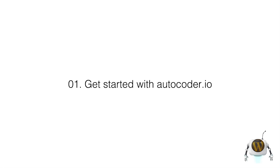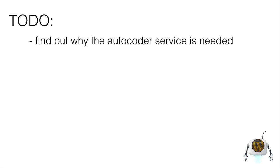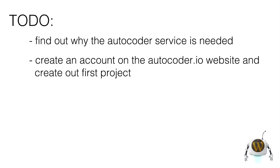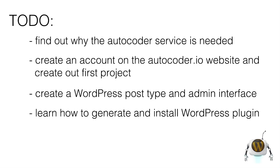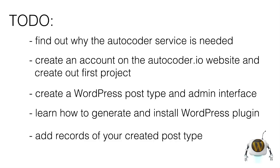In this video, I'll tell you how to get started with the Autocoder service. We'll find out why the Autocoder service is needed, as well as create an account on autocoder.io and create our first project. We'll create a WordPress post type and an interface for managing it in the WordPress admin console, learn how to generate and install a WordPress plugin created by the Autocoder service, and add records of our post type and see how to use the Autocoder-created interfaces.